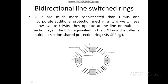In BLSR, two fibers are used as working fibers and two are used for protection, as we can see in the diagram. This is called BLSR-4 because four fibers are used — two for working and two for protection. Unlike a unidirectional path-switched ring, working traffic in the BLSR can be carried in both directions along the ring.